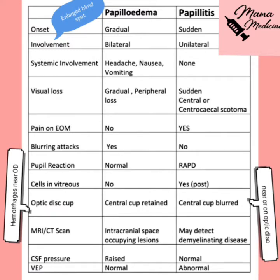Papillitis is generally more severe than papilledema in terms of ocular effects. The vitreous is normally clear in papilledema, but there may be some cells present in the posterior vitreous in papillitis. On fundus examination, the central cup of the optic disc is retained in papilledema, whereas in papillitis the edges are blurred and the central cup is very much blurred compared to the optic disc in papilledema.